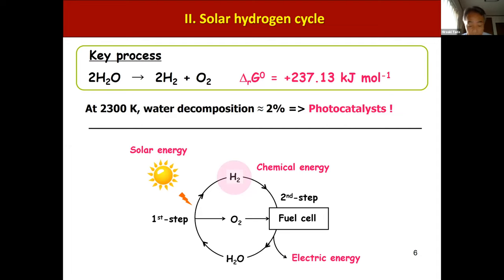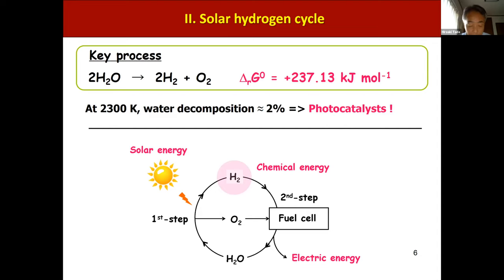In principle, this reaction can be driven by photons with energy larger than 1.23 eV, or light wavelengths shorter than about 1,000 nanometers. If hydrogen can be produced by effectively utilizing sunlight, input of hydrogen into a fuel cell generates electric energy to complete the solar hydrogen cycle.